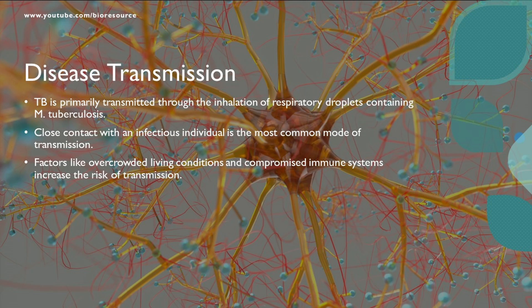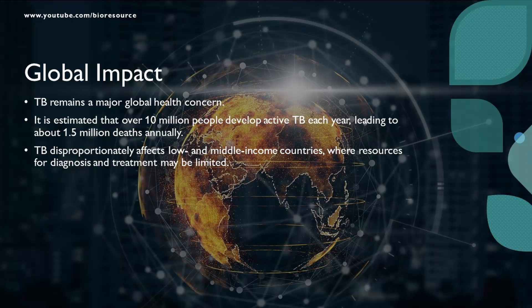TB is primarily spread through the inhalation of respiratory droplets containing the bacteria, and close contact with an infectious individual is the most common way it spreads. Factors like crowded living conditions and a compromised immune system can increase the risk of transmission.